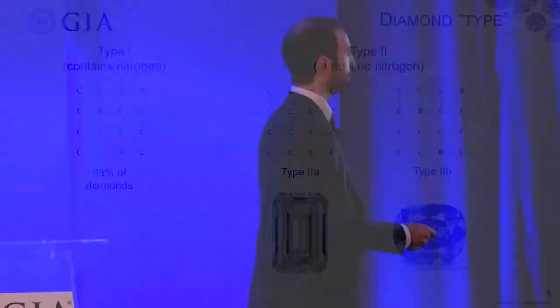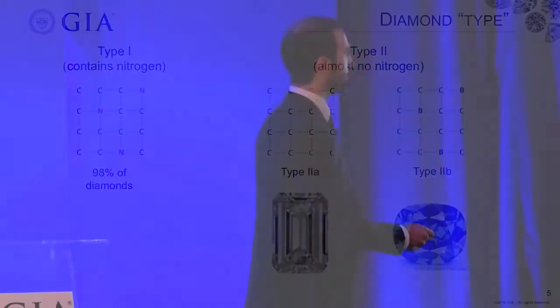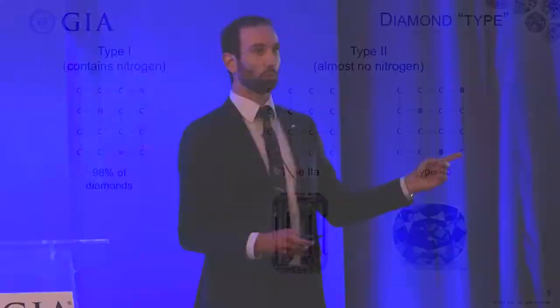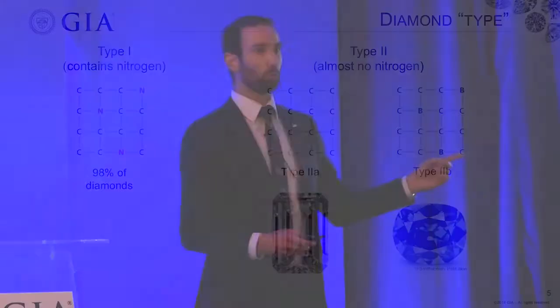Diamonds are a crystal of carbon with carbon atoms linked together. Sometimes these atoms can be replaced, and the most common replacement is nitrogen. When you can detect this nitrogen with infrared spectroscopy, this is a type 1 diamond — about 98 to 99 percent of all diamonds. On the other side, when you've got very pure diamonds where it's almost all just carbon, this is type 2. Type 2a is just carbon; type 2b has some carbons substituted with boron, which often causes an attractive blue color. The Hope Diamond is the perfect example of a type 2b diamond.